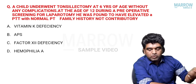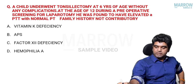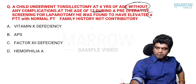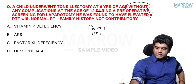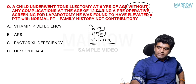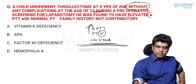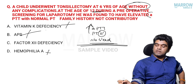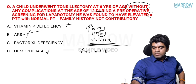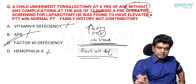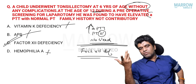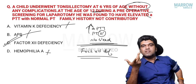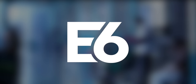Coming back to the NEET question: the child had tonsillectomy at age 6 with no bleeding, then at age 12 showed elevated APTT with normal PT and no bleed anywhere. Hemophilia is out; vitamin K deficiency would prolong PT. No thrombosis either. This is clearly a case of factor 12 deficiency, high molecular weight kininogen deficiency, or pre-kallikrein deficiency — not APS. Many students incorrectly wrote APS.